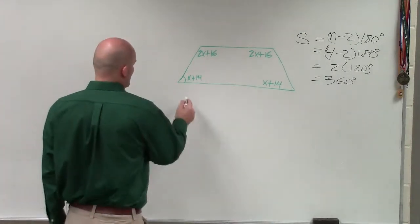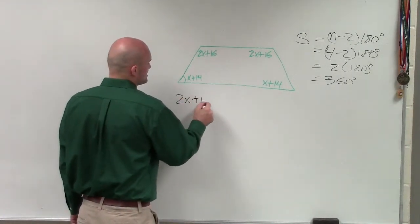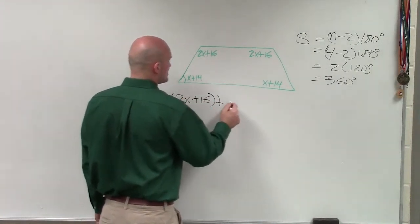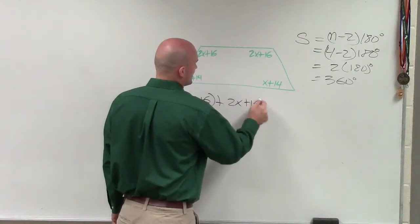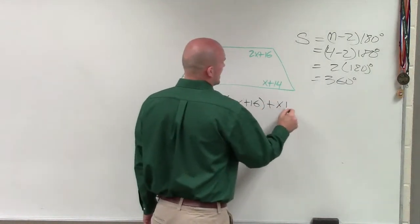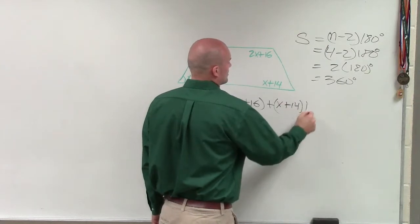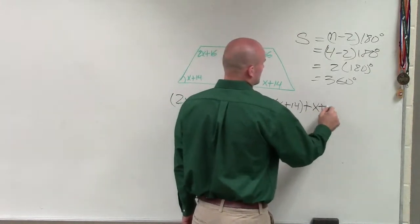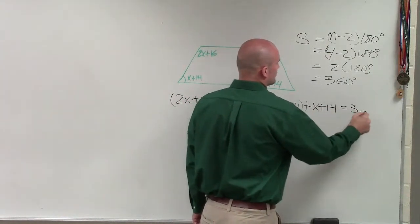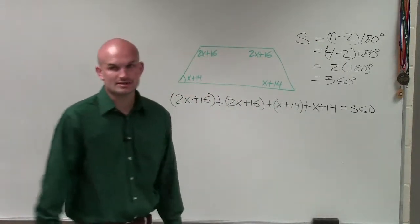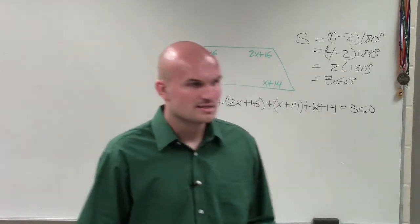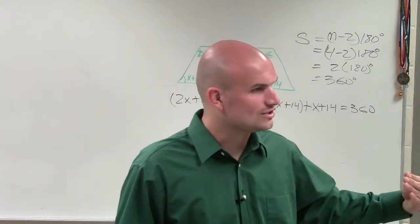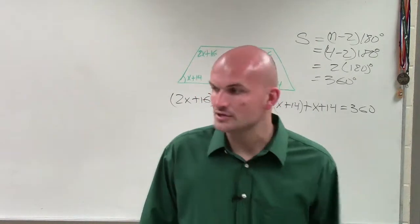So Terrell, what I write is 2x plus 16 plus 2x plus 16 plus x plus 14 plus x plus 14 equals 360 degrees. Does that make sense? The sum of all those angles equals 360 degrees.